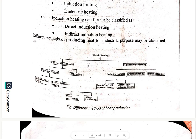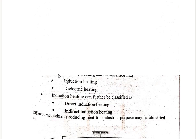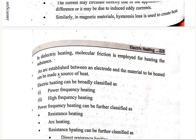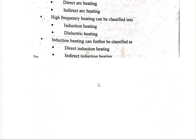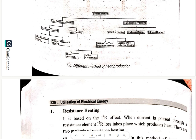For industrial purposes, electric heating may be classified into low frequency heating and high frequency heating. Low frequency heating types are resistance heating and arc heating. In resistance heating, the types are direct resistance heating, indirect resistance heating, and radiant heating. Arc heating is divided as direct arc heating and indirect arc heating. Similarly, in high frequency heating, there is direct induction heating and indirect induction heating.